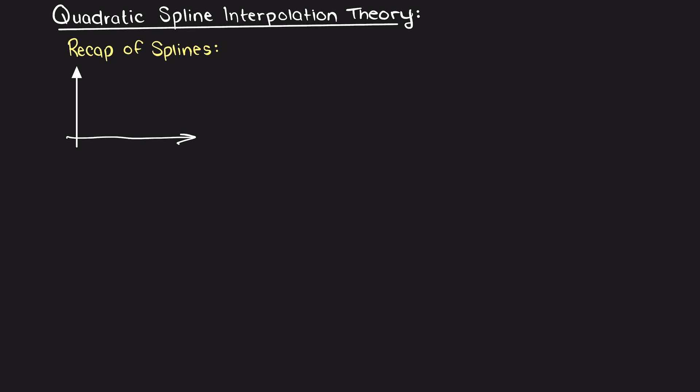As the name implies, quadratic spline interpolation is a specific type of spline interpolation that uses quadratic equations as our splines.